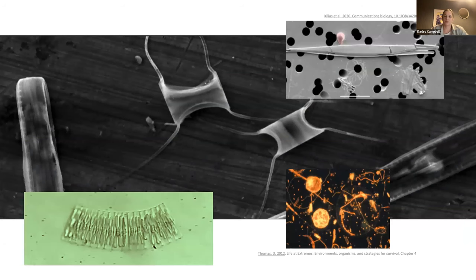Despite its bleak appearance, there is life within sea ice. There are algae — photosynthetic organisms contributing to the base of the marine food web — as well as microorganisms like bacteria and fungi like the chytrid in the top right corner, co-occurring or infecting a sea ice diatom.